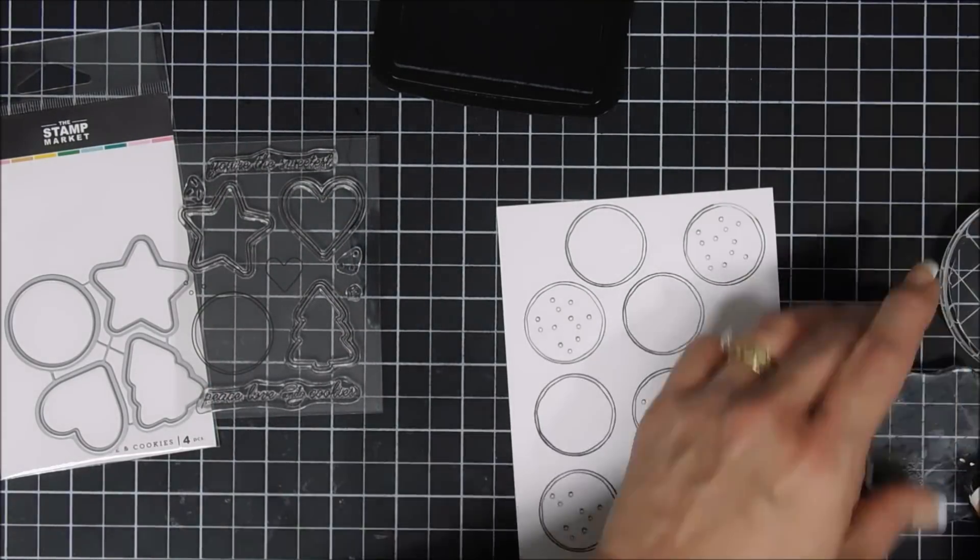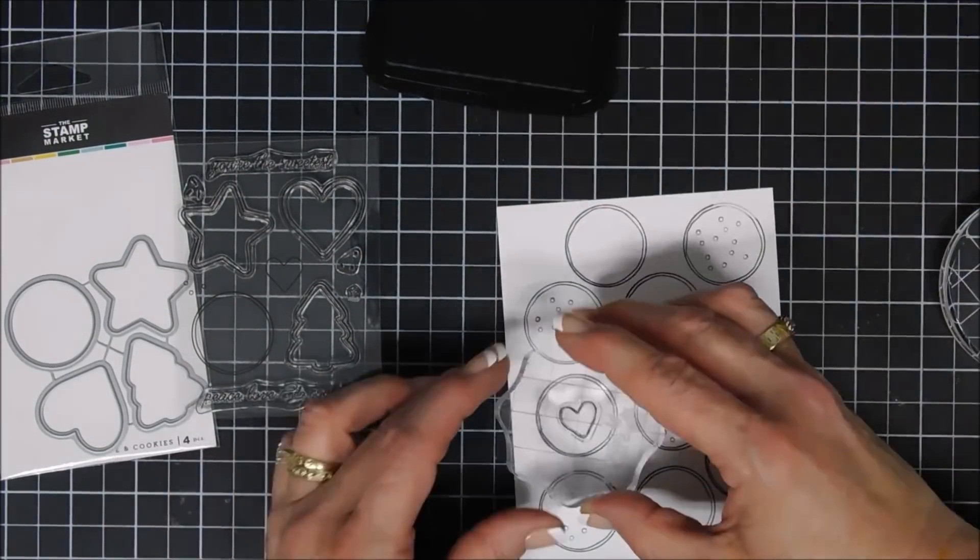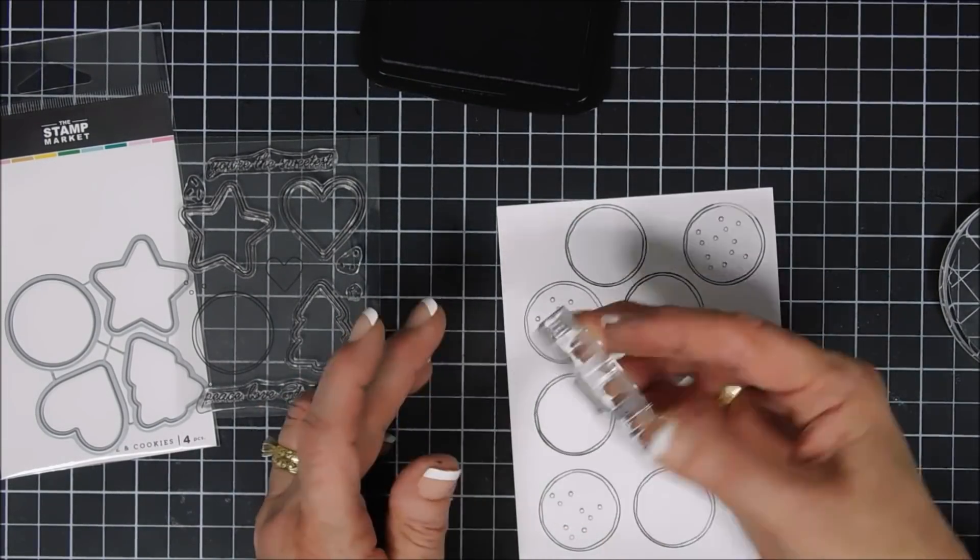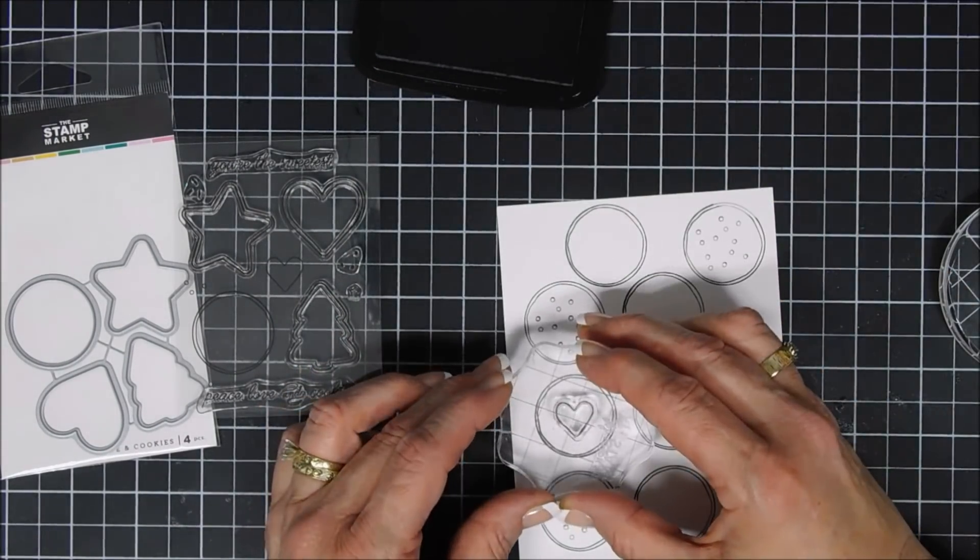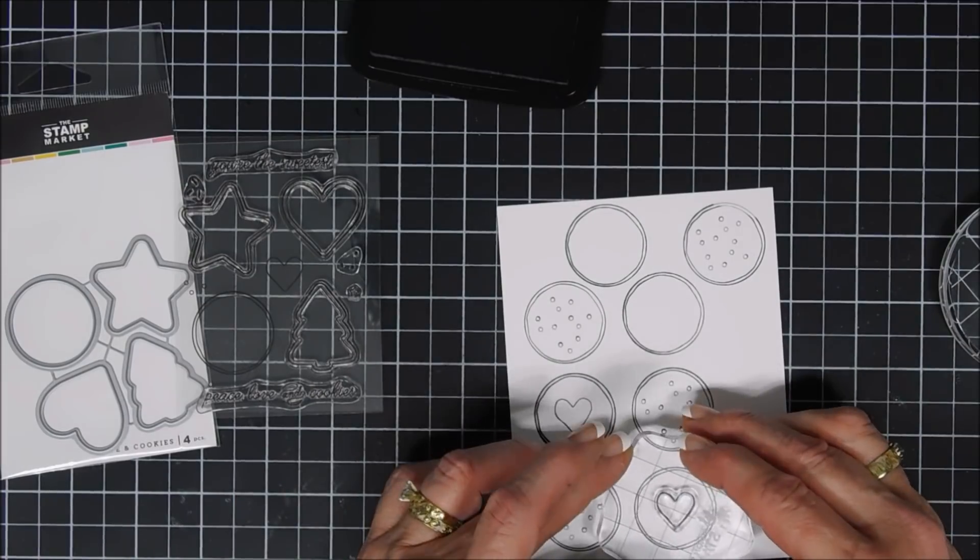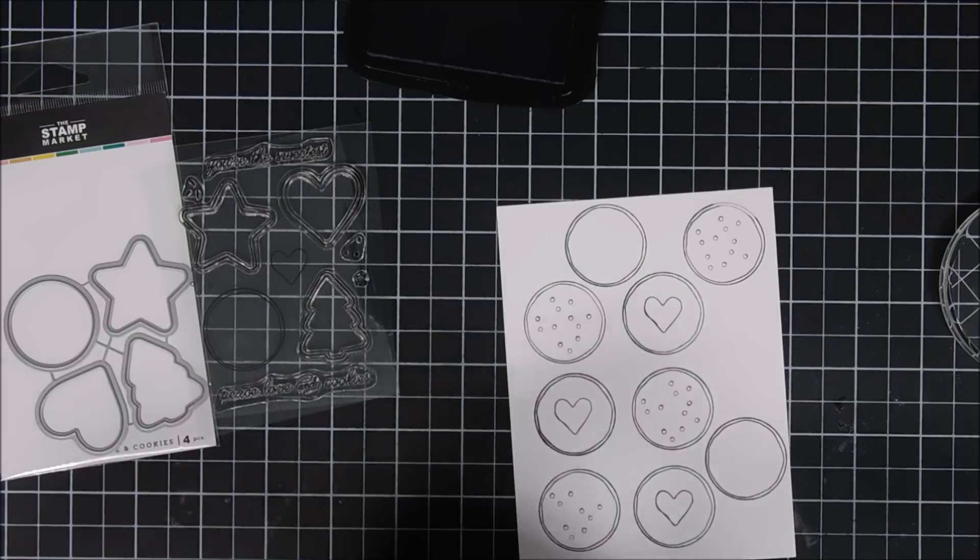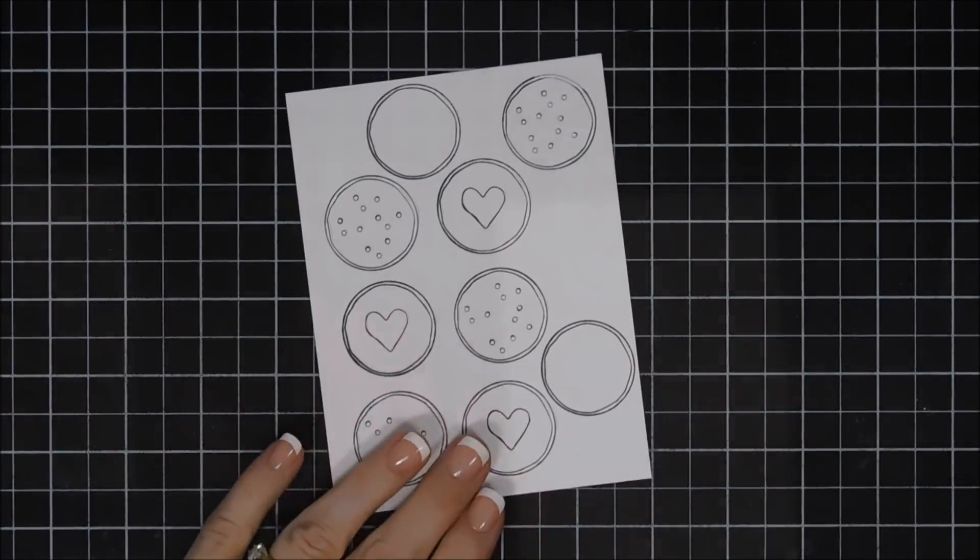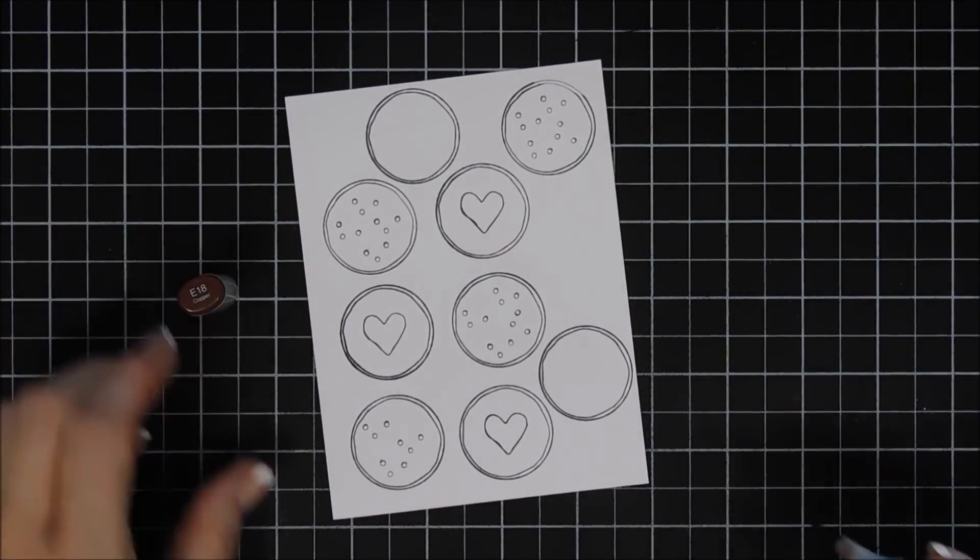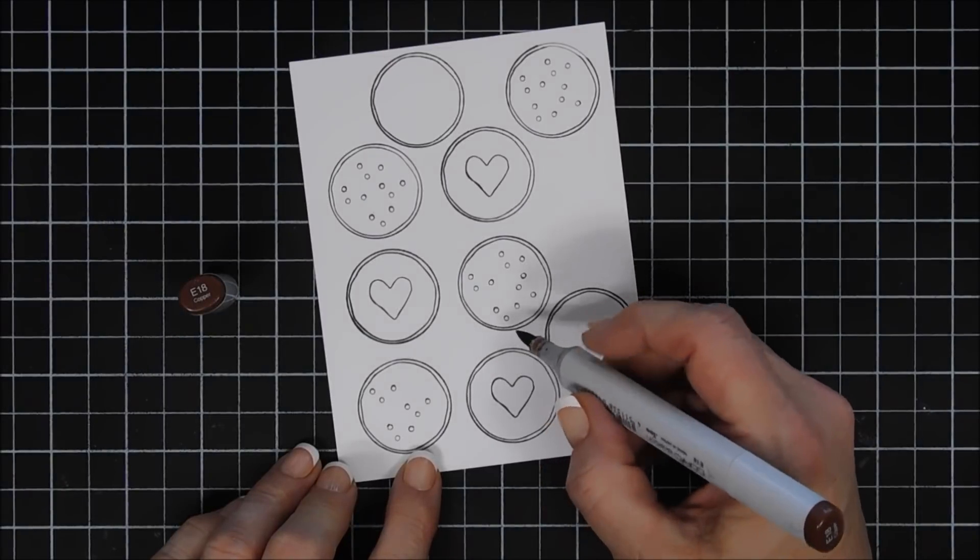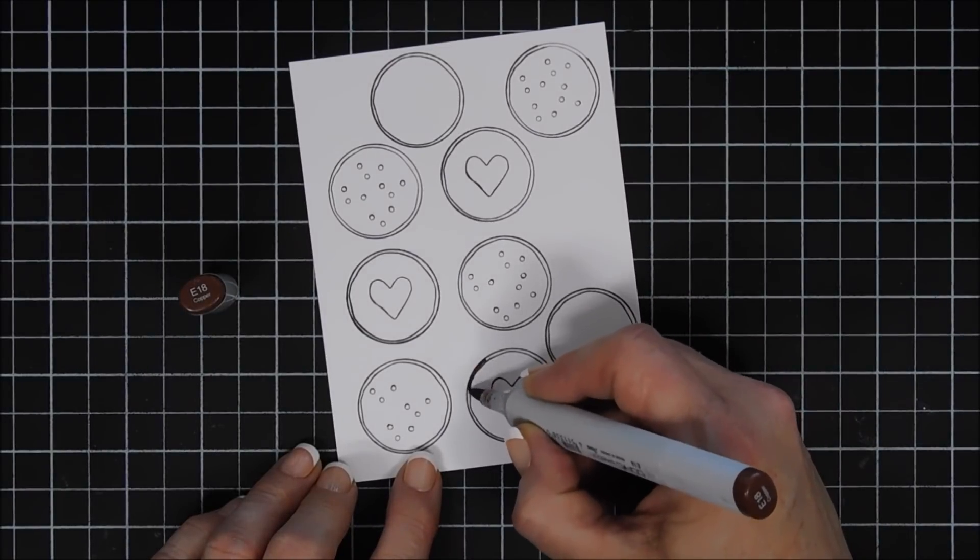There's an option in that little stamp set for you to do that. Now I'm going to create a few little Linzer cookies by adding a heart to the center of three of them. For the other two, I'm going to leave blank. There's a little sprinkle image in the stamp set and I want to add some sprinkles, but I'm going to start coloring.